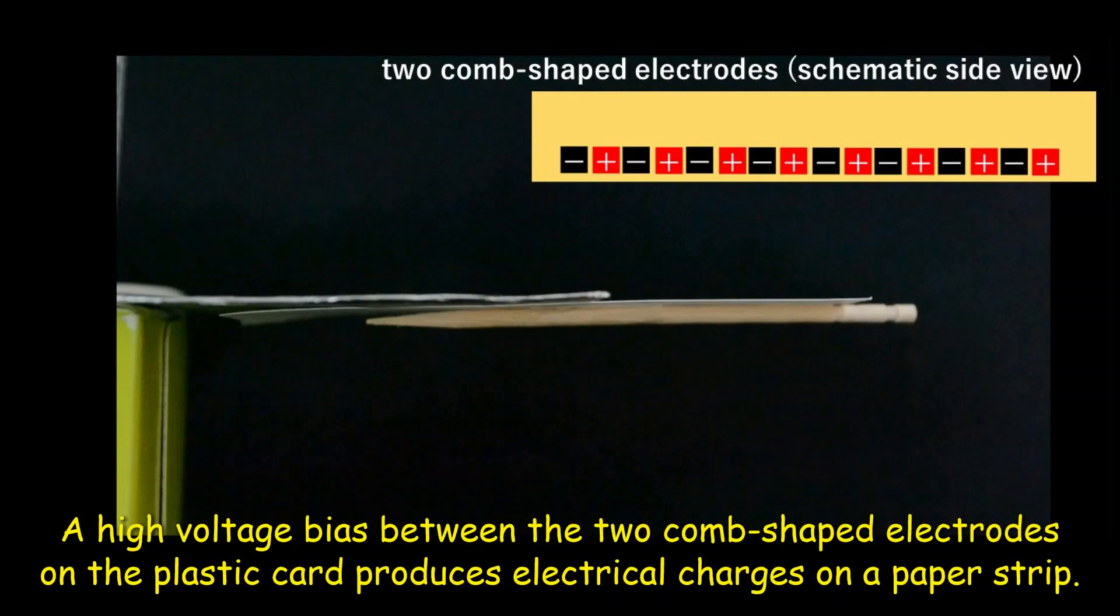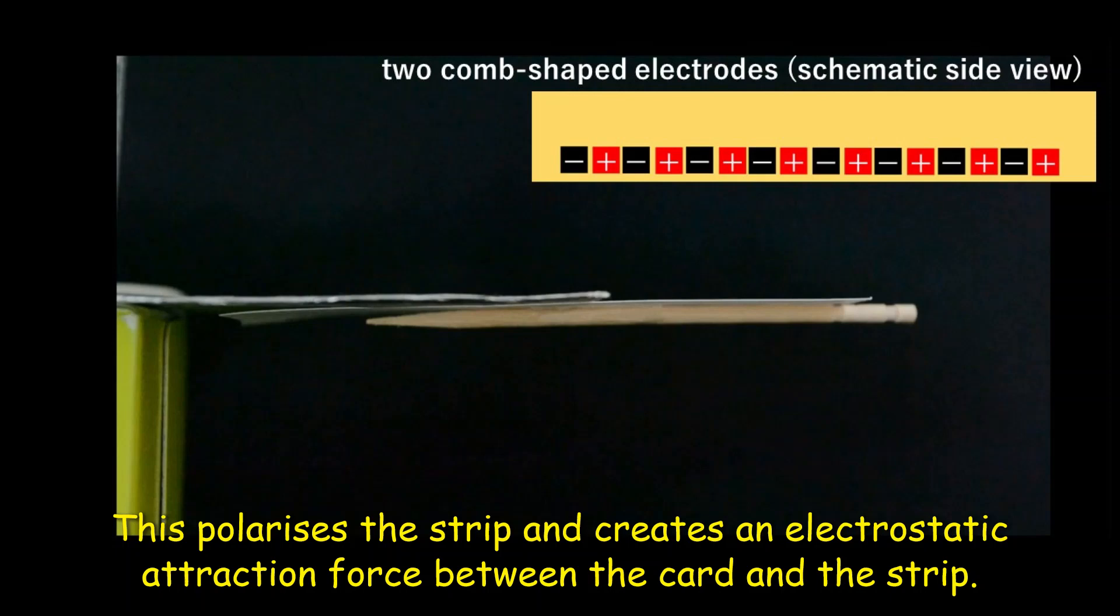A high voltage bias between the two comb-shaped electrodes on the plastic card produces electrical charges on a paper strip. This polarizes the strip and creates an electrostatic attraction force between the card and the strip.